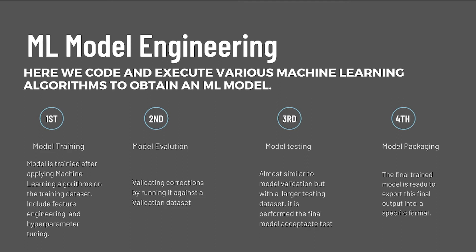Second is model evaluation. Once we have a trained ML model, we validate its correctness by running it against a validation dataset. Third is model testing, where we provide a larger testing dataset. The purpose of model testing is to perform the final model acceptance test using the holdback test dataset. The last step is model packaging — once we have a final trained model ready to deploy, we export it into a specific format such as PMML, PFA, or ONNX. This is similar to the way software is packaged, like .exe for Microsoft or .dpkg for Linux.